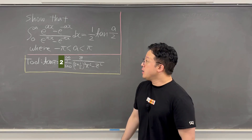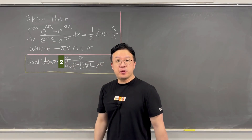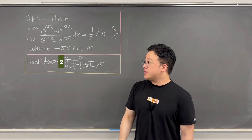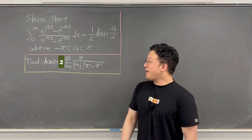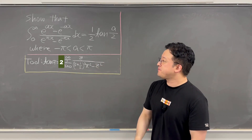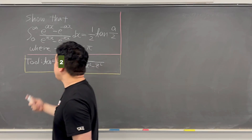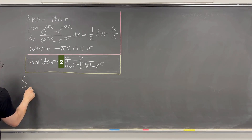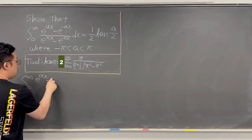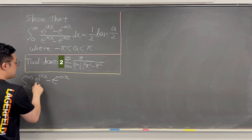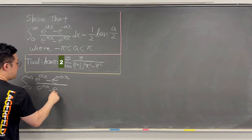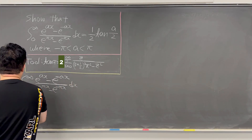Okay, here's the second one. We'll be using exactly the same strategy from the previous one — working on a series expansion for the integral and recognizing it as a function that is easier to work with using the little tool about tangent(z). So the integral from zero to infinity of (e^(ax) − e^(-ax)) / (e^(πx) − e^(-πx)) dx.